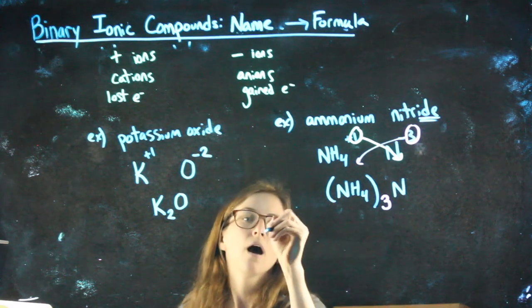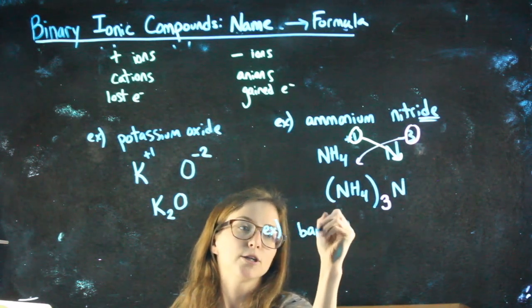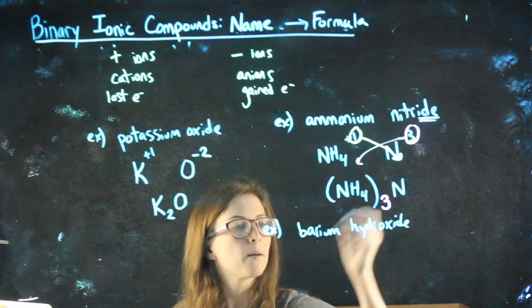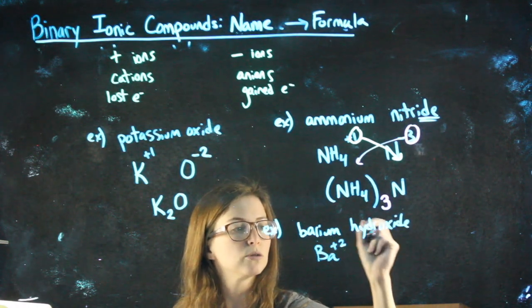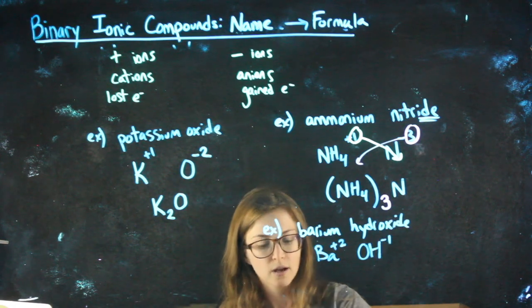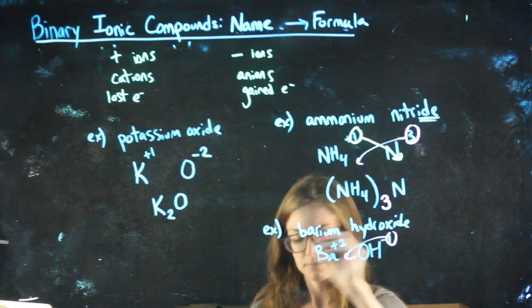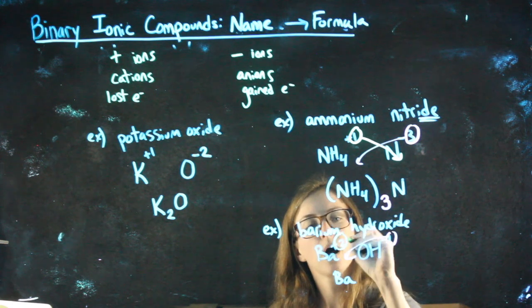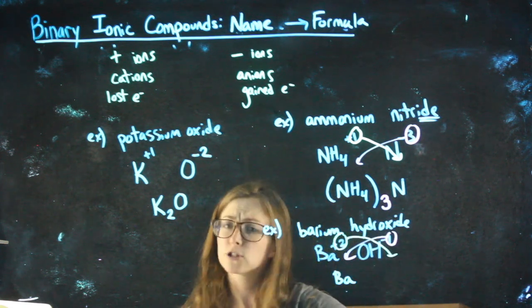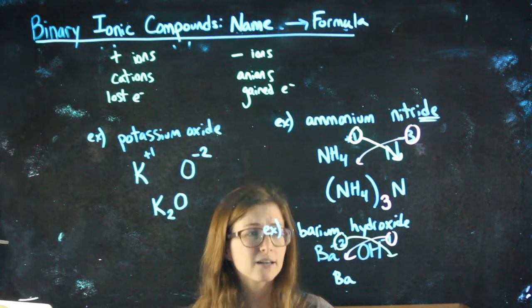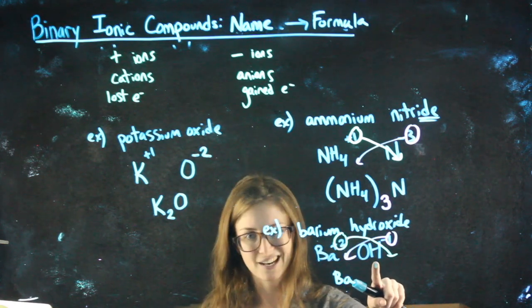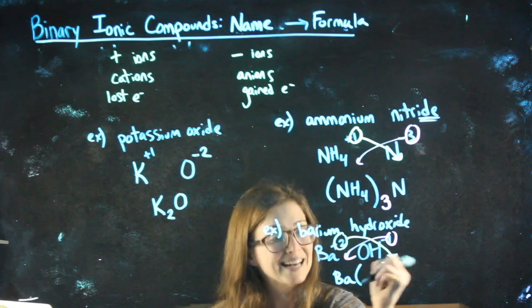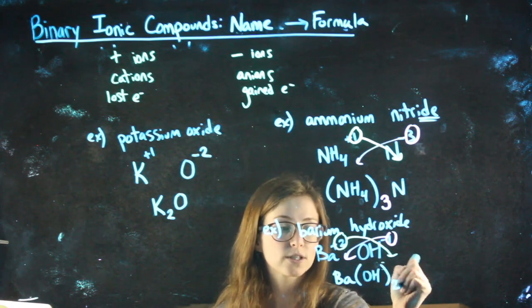Barium. Another example. Barium hydroxide. Barium is a plus two. Hydroxide is a minus one. I need one barium and I'm going to need two of the hydroxide group. For some reason, a lot of people think they don't need parentheses here. I think they think that because hydroxide by itself doesn't have any subscripts, whereas ammonium does. But I need two of the whole group. I need to put the hydroxide in parentheses in order to give it a two.